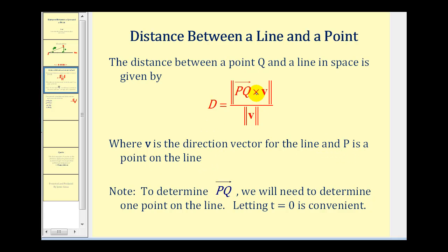To set this up we're going to have to determine two things: the directional vector as well as a point on the line, so we can determine the component form of vector PQ.